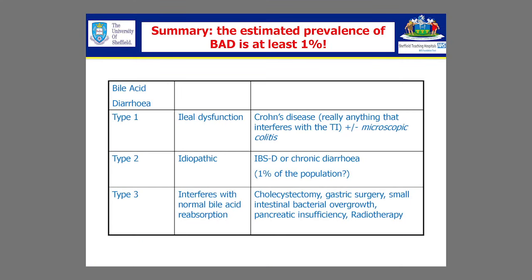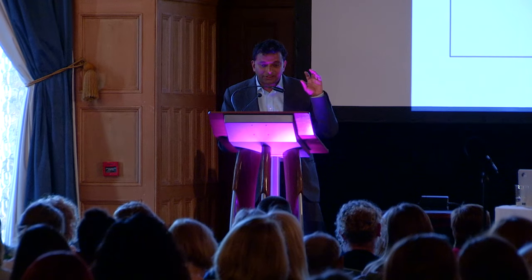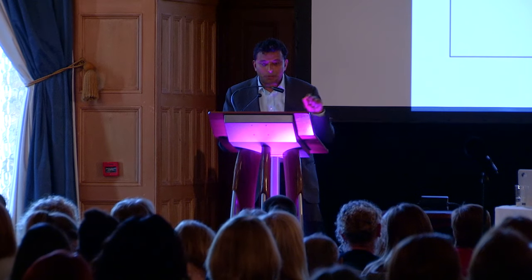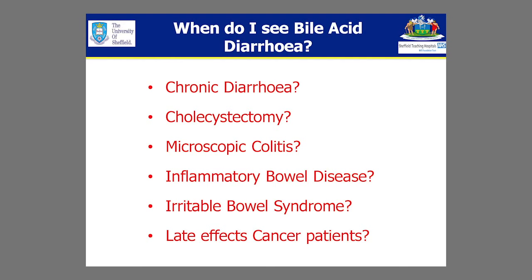This is a summary of the different types — a historical categorization. It lists different things that interfere with the enterohepatic circulation. For example, if you had Crohn's disease and had a right hemicolectomy, you're less likely to reabsorb your bile acids and very likely to have bile acid diarrhoea. Interestingly, this historical categorization calls type 2 idiopathic, and in fact that is the largest group — probably 1%, one in 100. I've listed conditions where, quite aside from the background population of 1%, these might trigger you: chronic diarrhoea, cholecystectomy, inflammatory bowel disease, and late-effects cancer patients, since radiotherapy, although thought of as targeted, often leaves residual bile acid dysfunction.